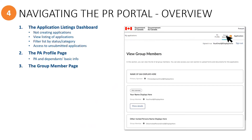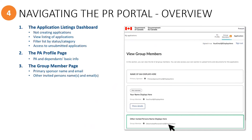The group members page is where you will see the primary sponsor's information. So if you're invited by a sponsorship agreement holder, you will see the name of the organization and their email address on this page.